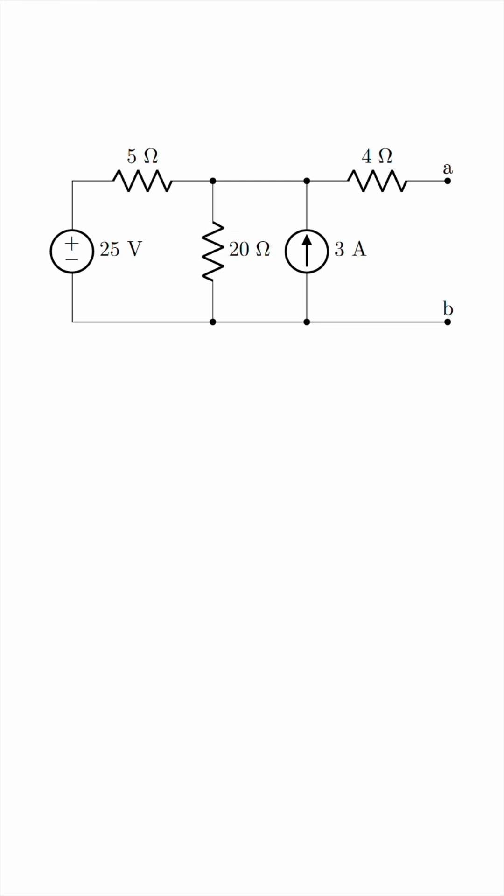Now, typically, we would find the open circuit voltage, the short circuit current, and then divide them to find the Thevenin resistance.